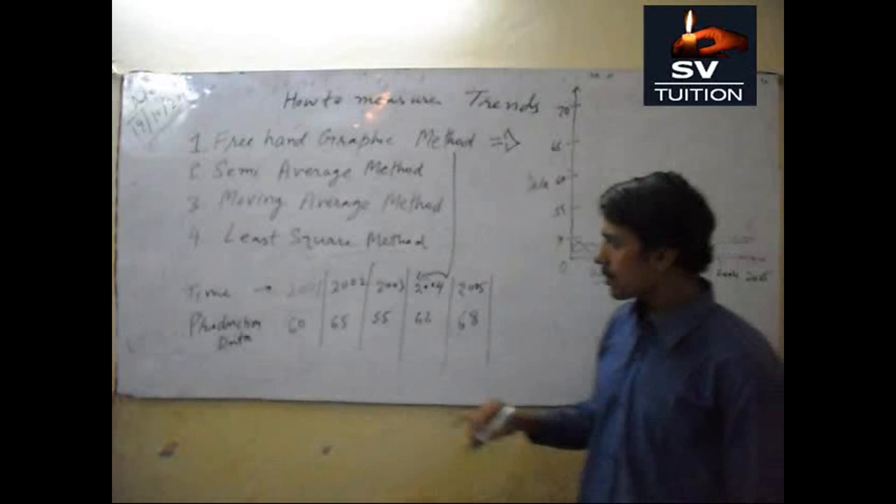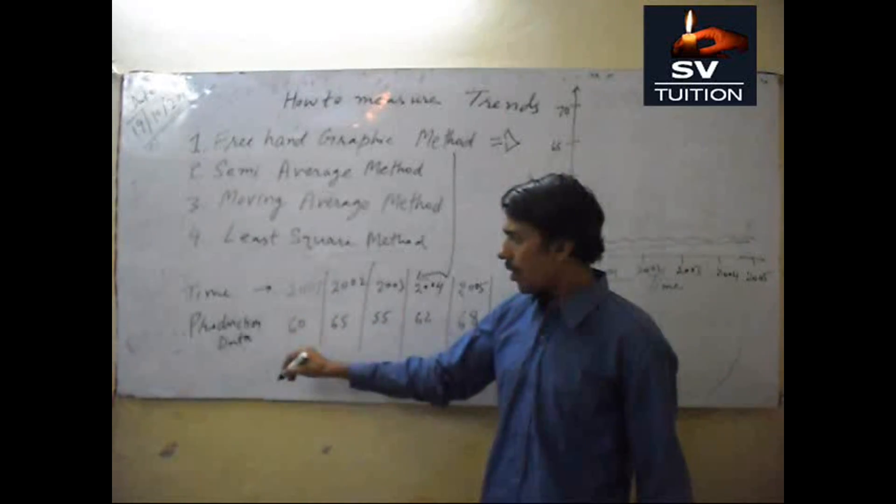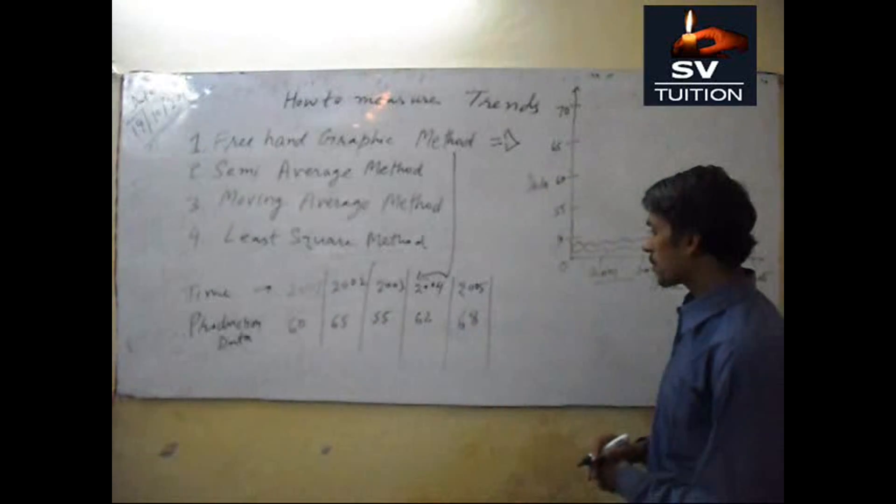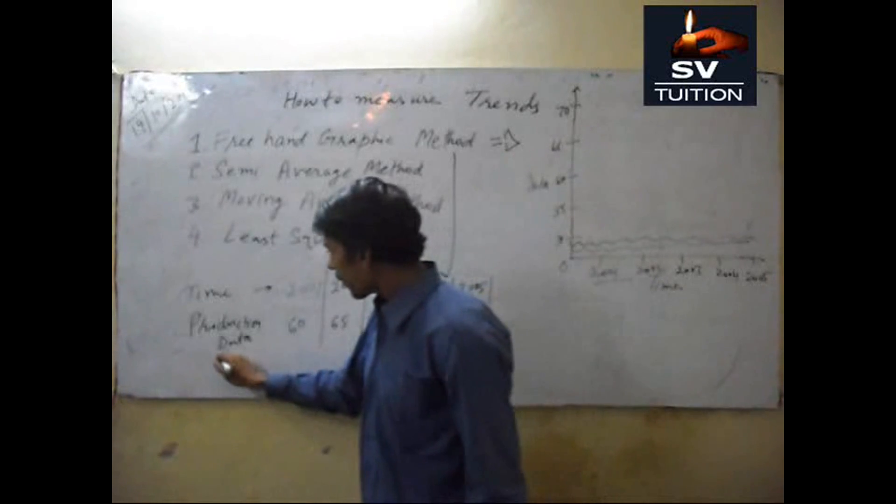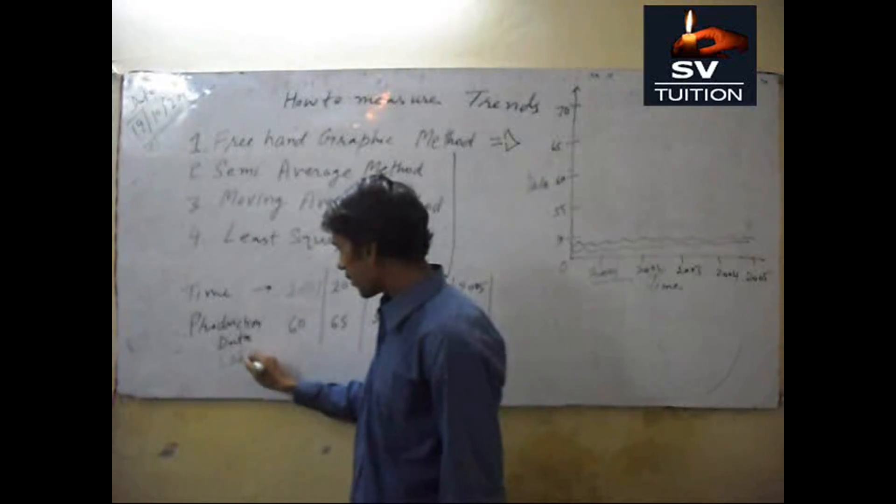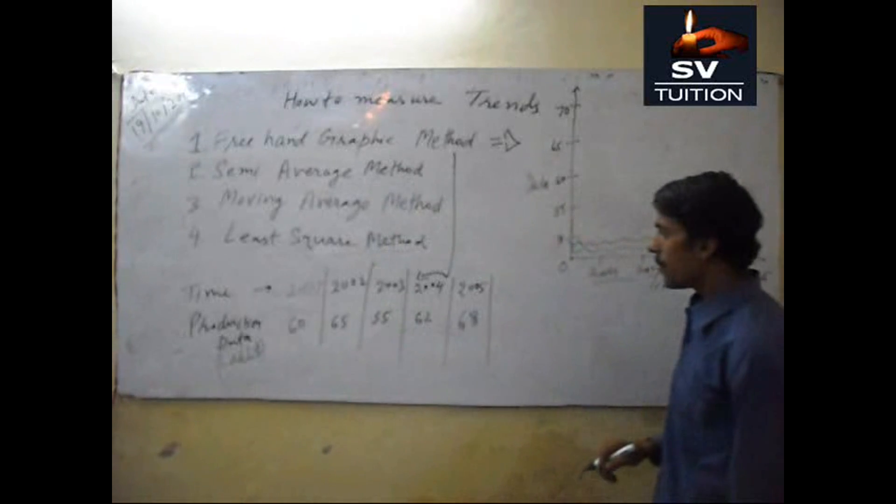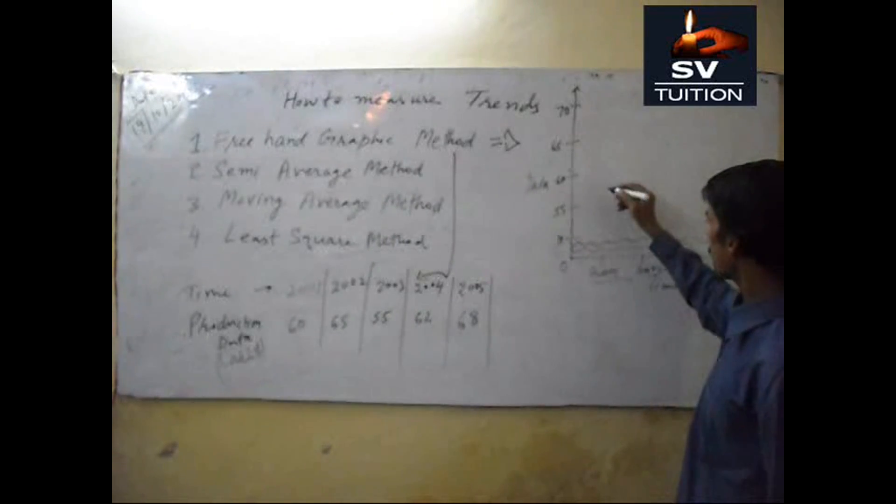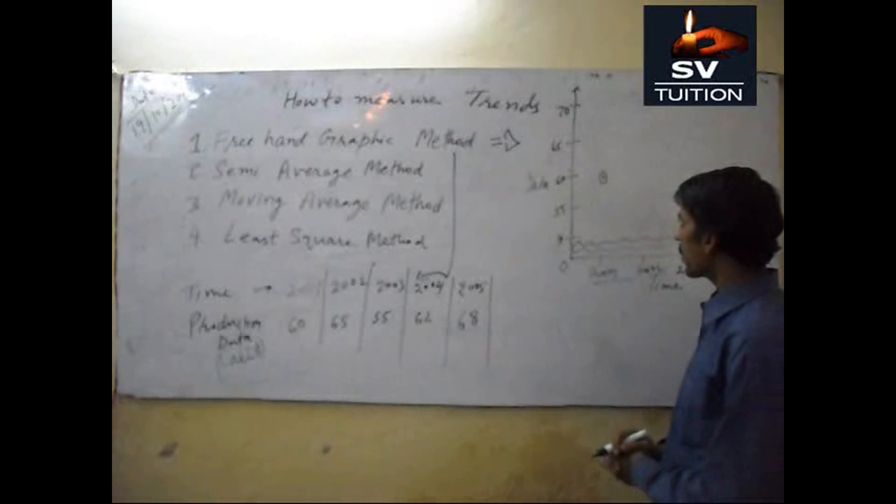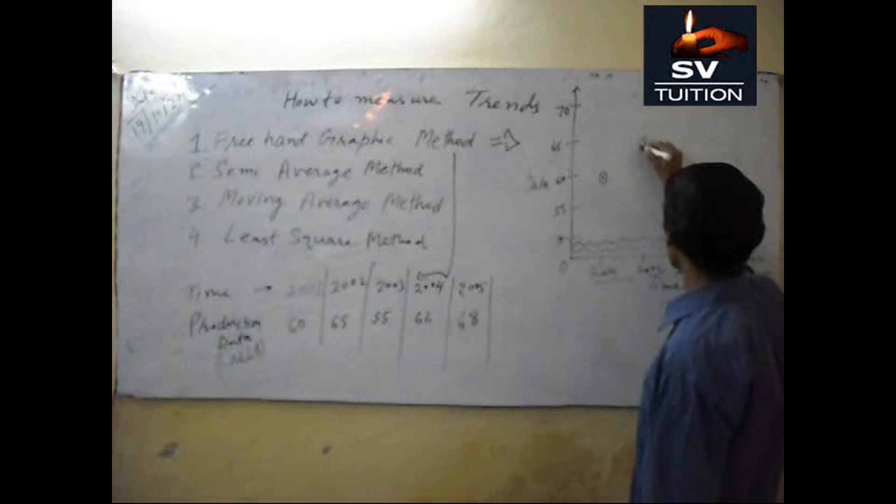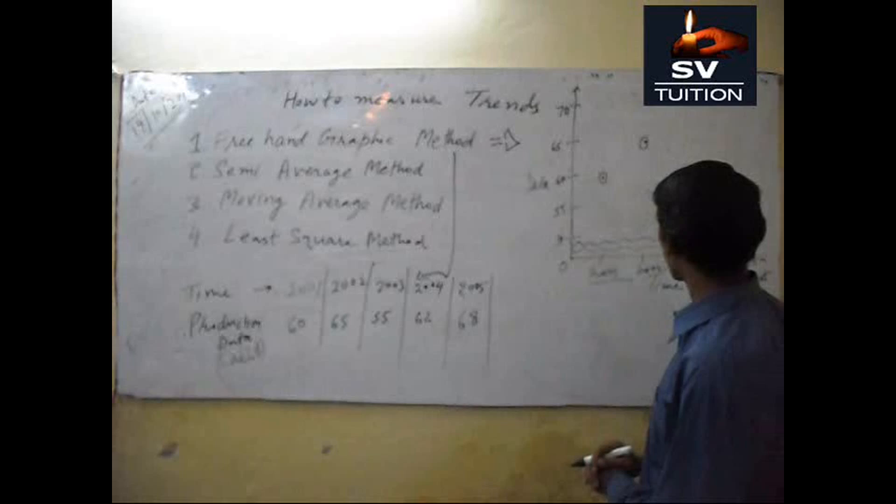First, 2001, our production is 60 lakh dollars. 60 is this, this is the point. Then 65 here and then 55, this is 55.